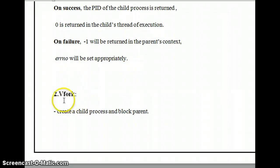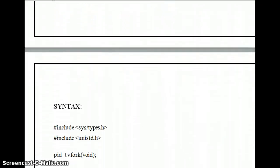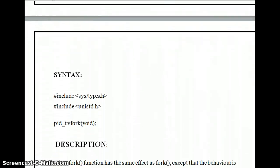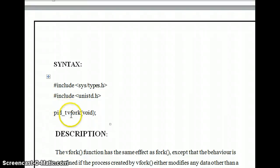The next system call is vfork. The vfork system call creates a child process and it blocks the parent process — a new child process is created and the parent process is blocked. The same header files are used: sys/types.h and unistd.h. A process ID is used and the vfork system call is included.